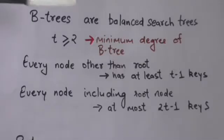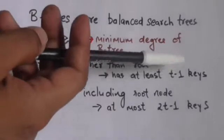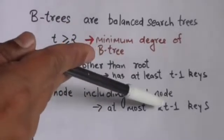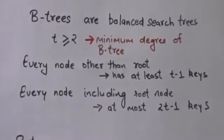For each B tree there is an integer t whose value is greater than or equal to 2, and this integer is called the minimum degree of the B tree. Every node of a B tree other than the root node must have at least t minus 1 number of keys, and every node including the root node may contain at most 2 times t minus 1 number of keys.